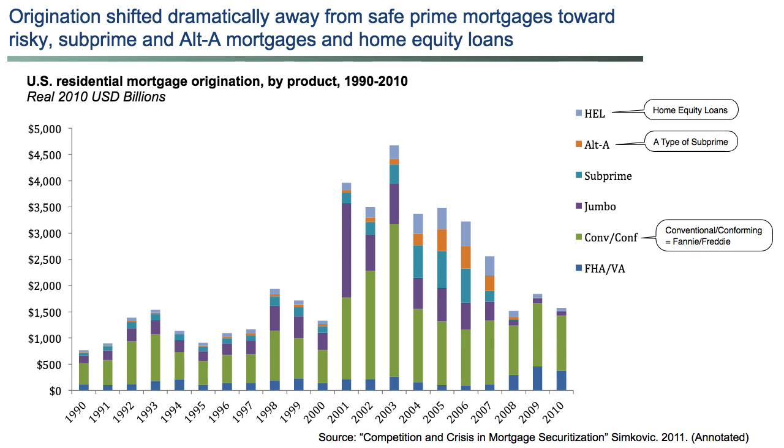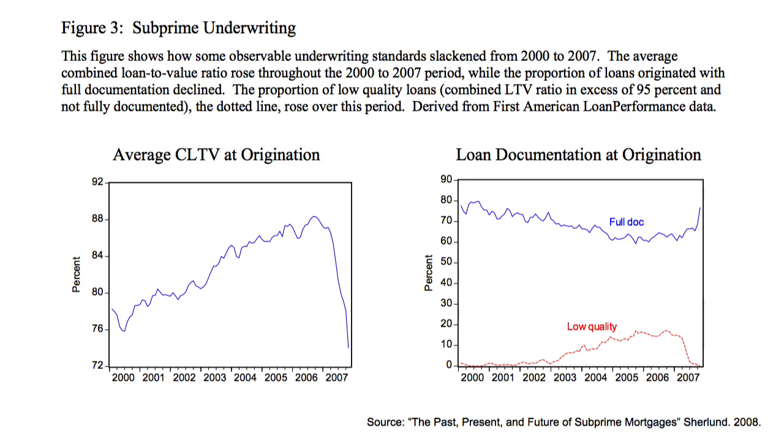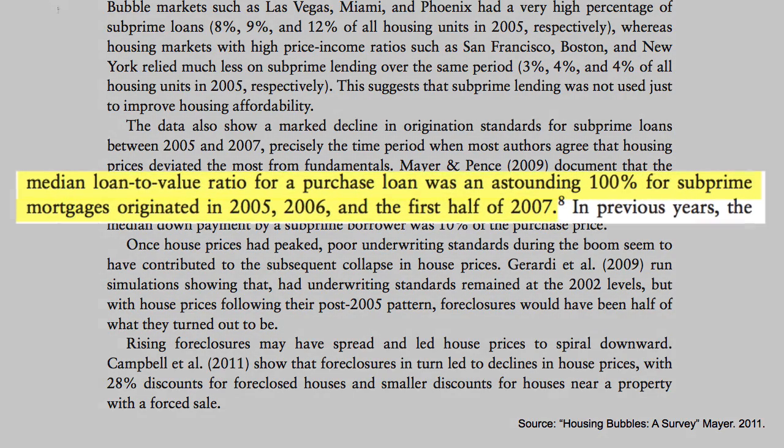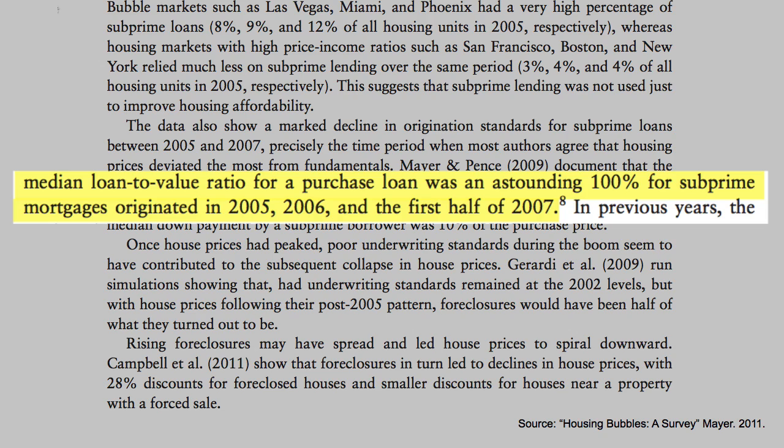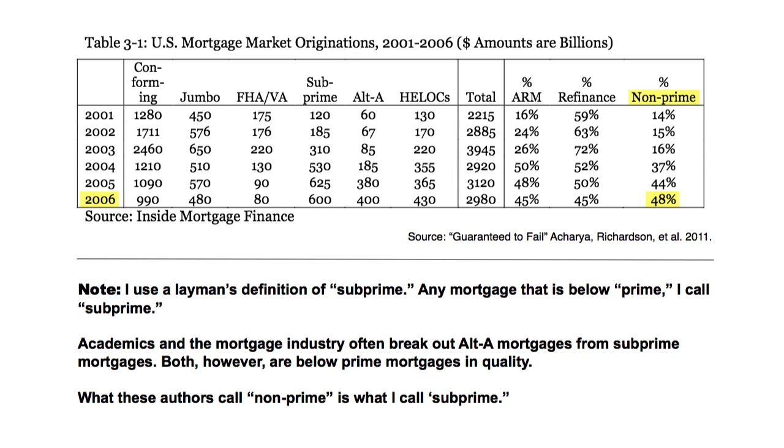As the refinancing boom was ending in 2003, the subprime mortgage boom really started to take off — and at the same time subprime mortgages were getting riskier. Credit scores fell, down payments fell, maximum loan amounts rose, fraud rose. Subprime lending standards fell so far that from 2005 to 2007 the median subprime mortgage had zero down payment. By 2006, half of all mortgages were subprime. Some people chose subprime because they couldn't get prime mortgages; others chose subprime so they could borrow more money. Either way, the increase in subprime mortgages meant people could borrow a lot more money to chase homes.